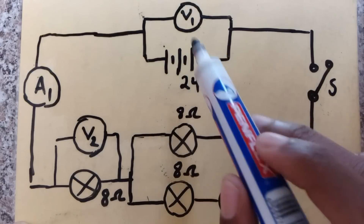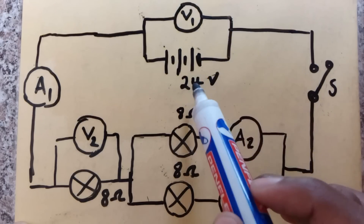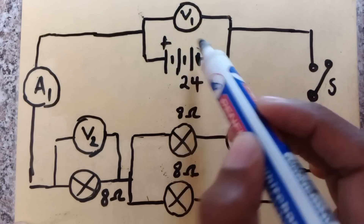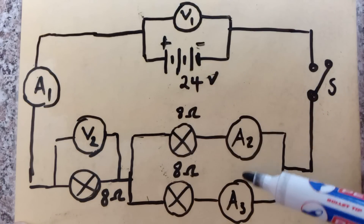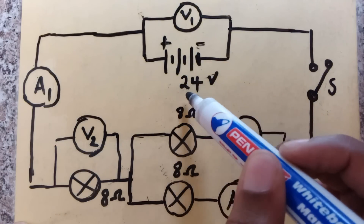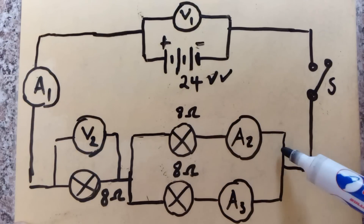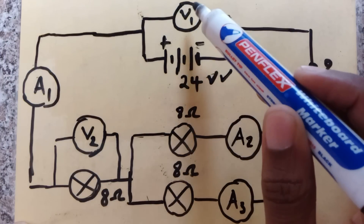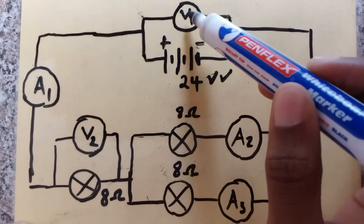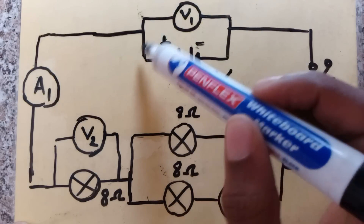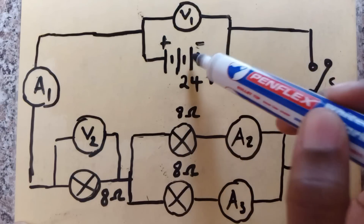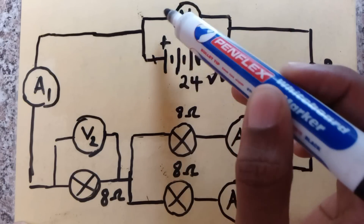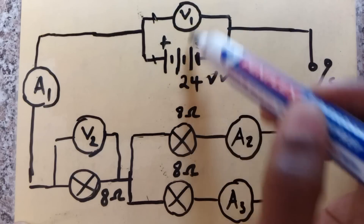This is the diagram given in the question. We have a battery — this is the positive terminal and this is the negative terminal — and that battery has 24 volts. Just above the battery, connected to it, is a voltmeter called V1, and it is connected in parallel to the battery, meaning they are on separate branches.